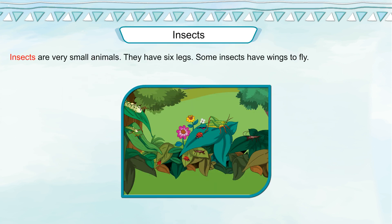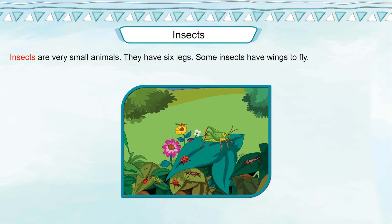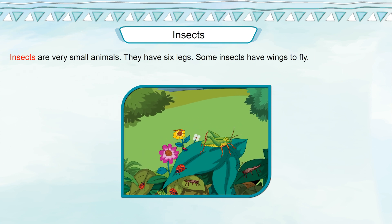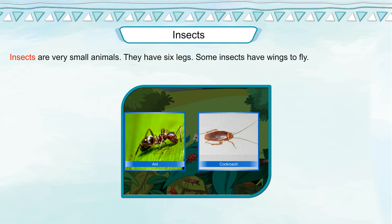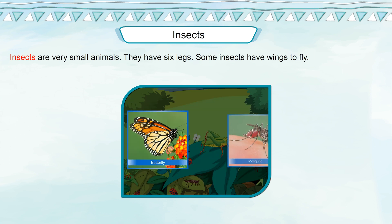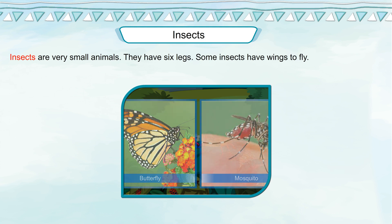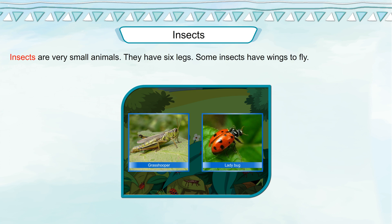Insects. Insects are very small animals. They have six legs. Some insects have wings to fly. Cockroach, butterfly, mosquito, grasshopper, ladybug.